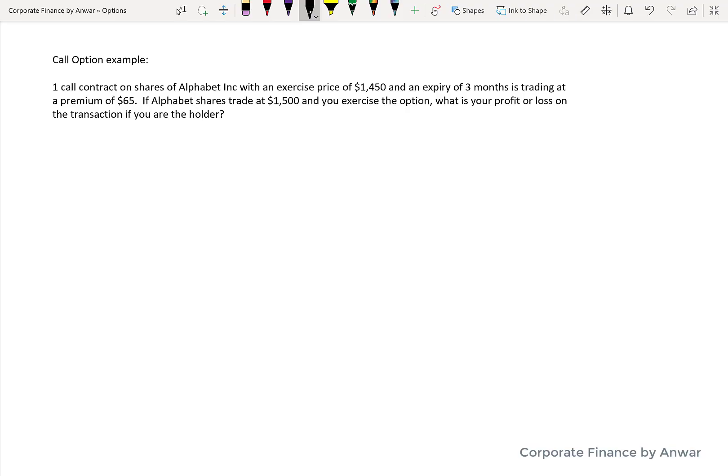Now I'm going to do an example of the pricing of a call option contract. Let's assume we have a situation where there is one call contract on shares of Alphabet Incorporated (Google) trading with an exercise price of $1,450 and an expiry of three months, trading at a premium of $65.